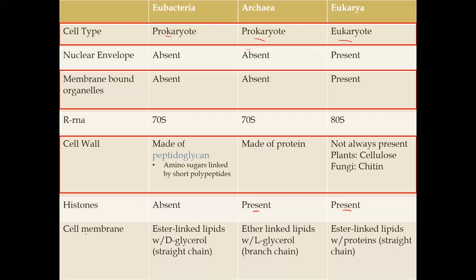The last characteristic we'll look at is cell membranes — specifically how lipids are linked. Eubacteria and Eukarya both have ester-linked lipids, while Archaea has ether-linked lipids, which form a stronger bond. This stronger bond is likely a derived characteristic that Archaea developed in order to survive extreme environments.